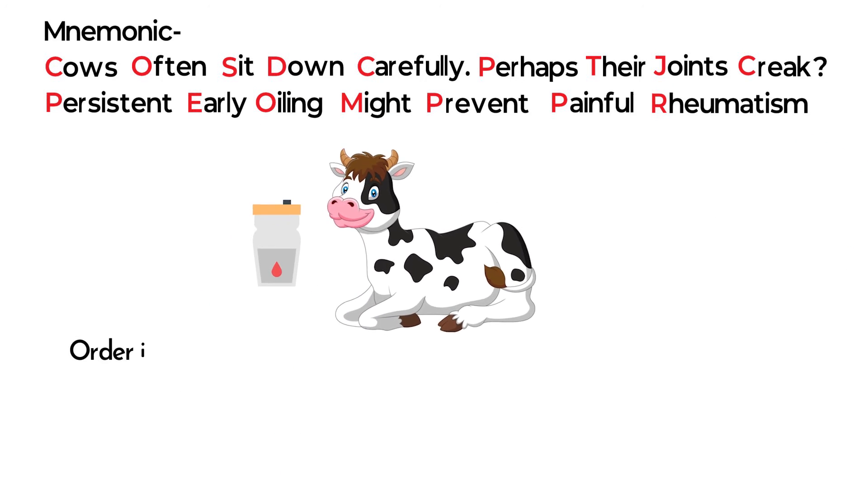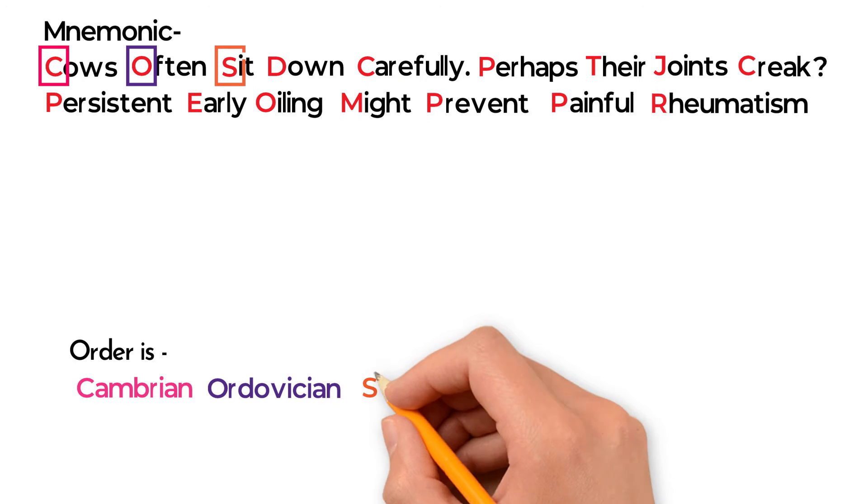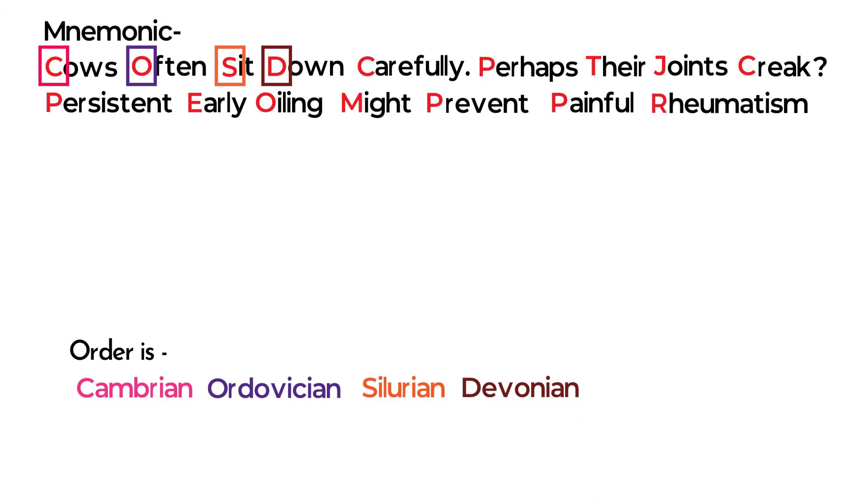And the order is: C in Cows for Cambrian, O in Often for Ordovician, S in Sit for Silurian, D in Down for Devonian.